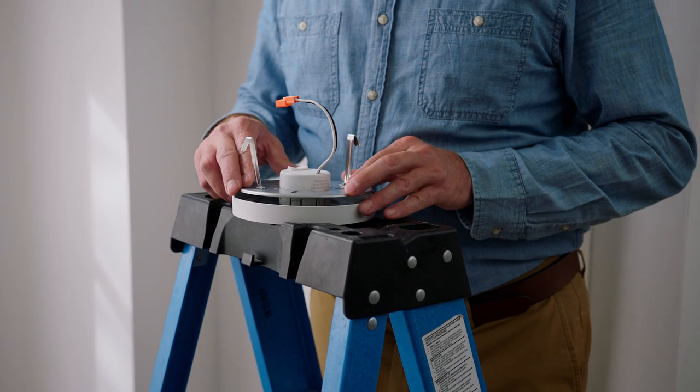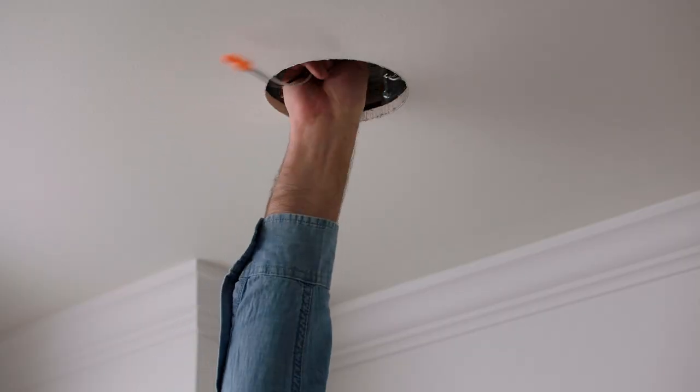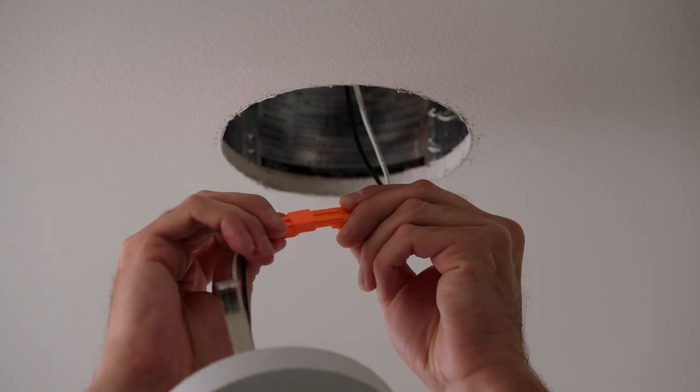Press the mounting plate into the back of the fixture around the driver box, using the clips to secure. Screw the E26 adapter into the socket and connect it to the fixture.